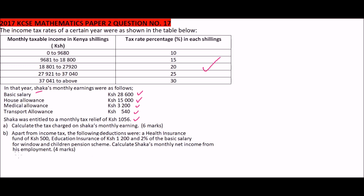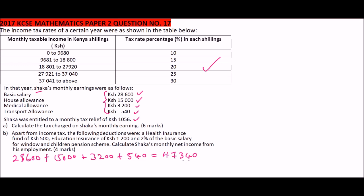The first step is to find the taxable income, which is the total of all earnings. We add twenty-eight thousand six hundred, plus fifteen thousand, plus three thousand two hundred, plus five hundred and forty. The total taxable income is forty-seven thousand three hundred and forty shillings.